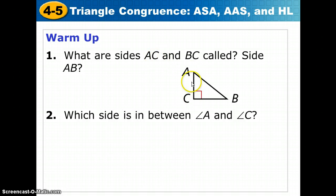What are the sides AC and BC called? Well, AC and BC are called the legs of this triangle, and then they also ask about side AB. That's the hypotenuse. This is a right triangle, so AC and BC are legs. AB is a hypotenuse. Now, in this triangle, what side is between angle A and angle C? That would be side AC.